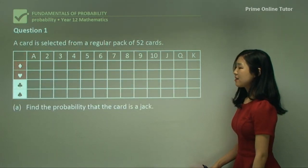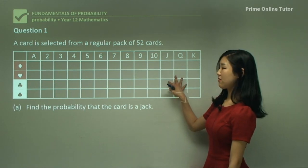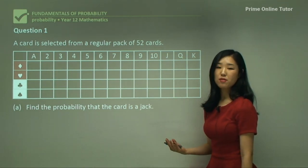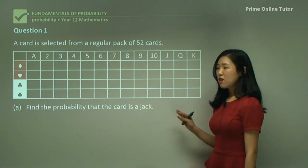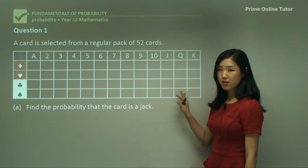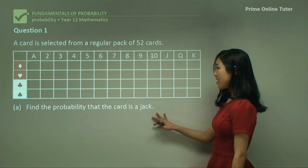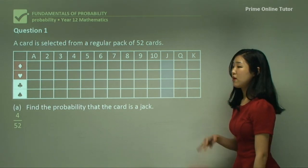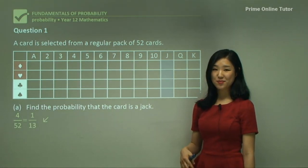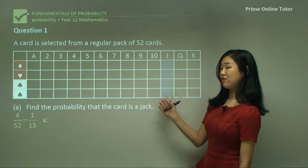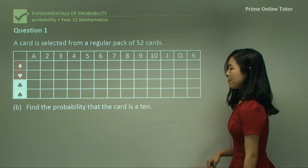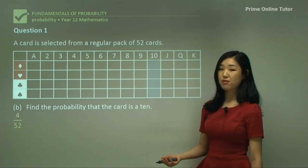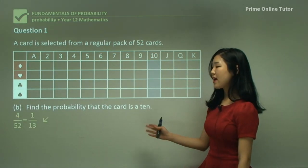Question 1A: find the probability that the card is a Jack. Referring to the table, Jack appears in all four suits, so there are 4 Jacks. Therefore it's 4 out of 52, simplified to 1 over 13. Question 1B: find the probability that the card is a 10. Again, there are only 4 tens out of 52, so the probability is also 1 over 13.